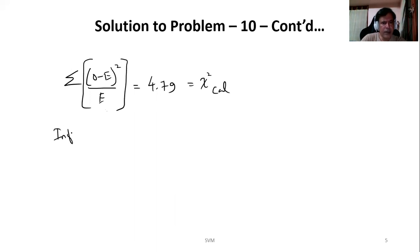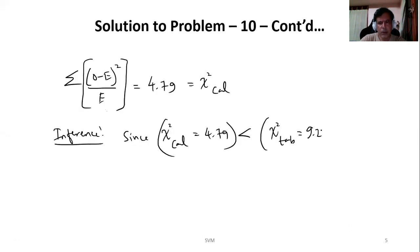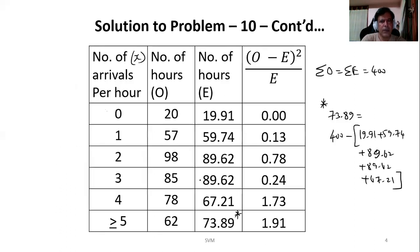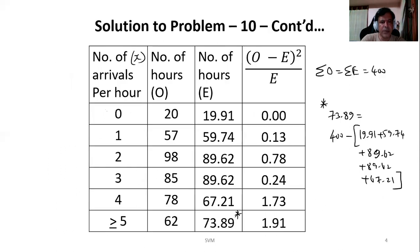Now we can come to our inference. Since chi square cal which is 4.79 is definitely lesser than chi square tab, that is chi square table value 9.236, we accept H naught. That will be our conclusion. It means the data given in the question, we can conclude that it would have come from a population which follows a Poisson distribution with lambda equal to 3. That will be our conclusion when I say H naught is accepted.